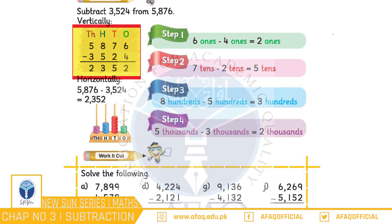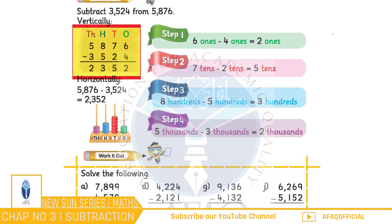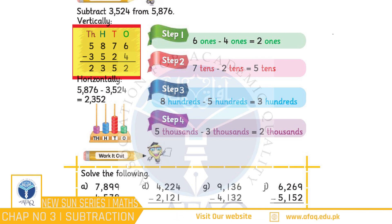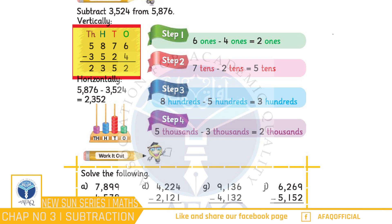7 tens minus 2 tens jiska jawab hoga 5 tens. Aur iske baad 100s place par maujood values ko subtract karna hoga, yani 800 minus 500 jiska jawab hoga 300. Aur aakhir mein 1000s place par maujood values ko subtract karna hoga, yani 5000 minus 3000 jiska jawab hoga 2000. Bacchiyon, is tarike se hamara mukammal jawab banta hai: 2,352.